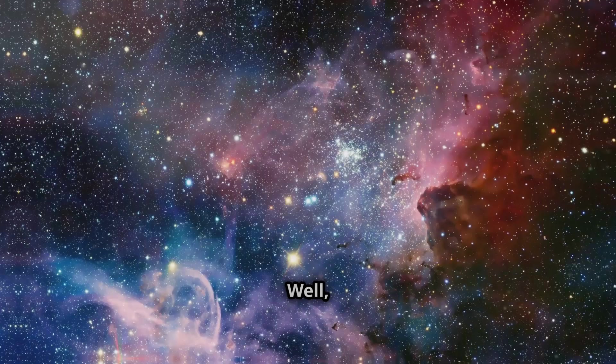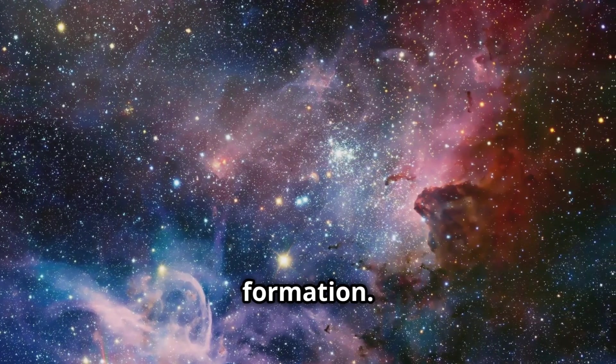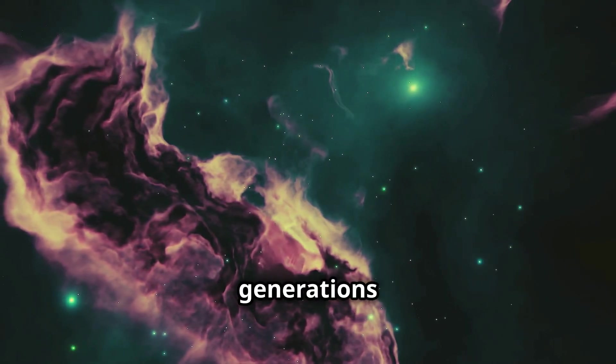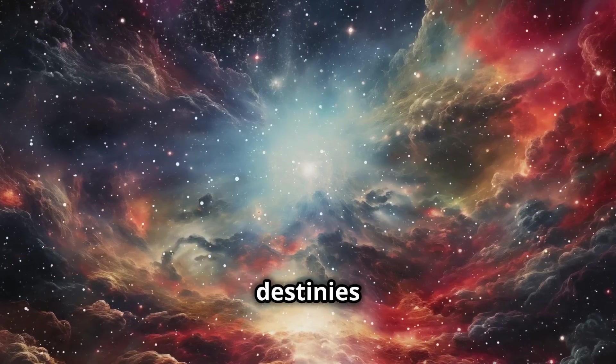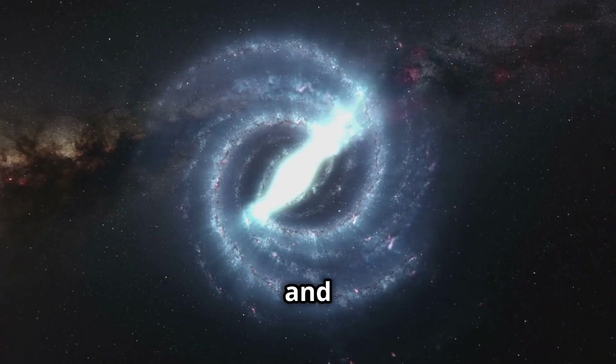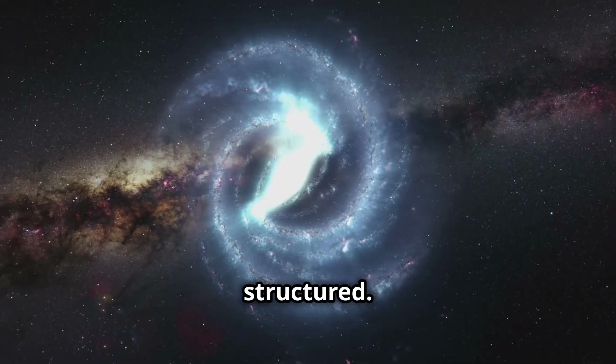So, what happens when galaxies collide? Well, the gravitational forces involved can trigger bursts of star formation. As gas and dust clouds are compressed, they ignite, giving birth to new generations of stars. These collisions can also alter the shapes and destinies of galaxies. Spiral galaxies, like our own Milky Way, can lose their spiral arms and transform into elliptical galaxies, galaxies which are more rounded and less structured.